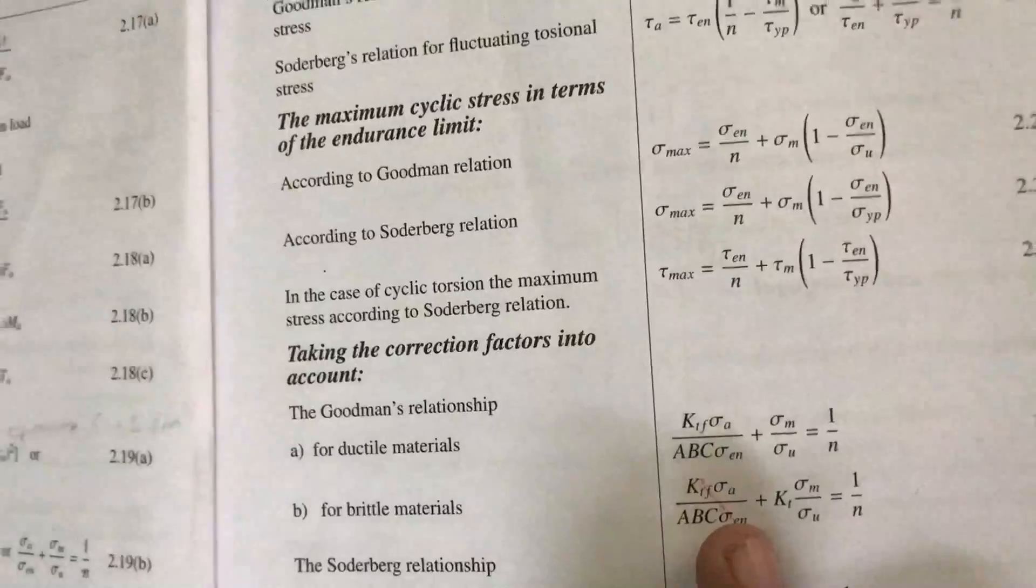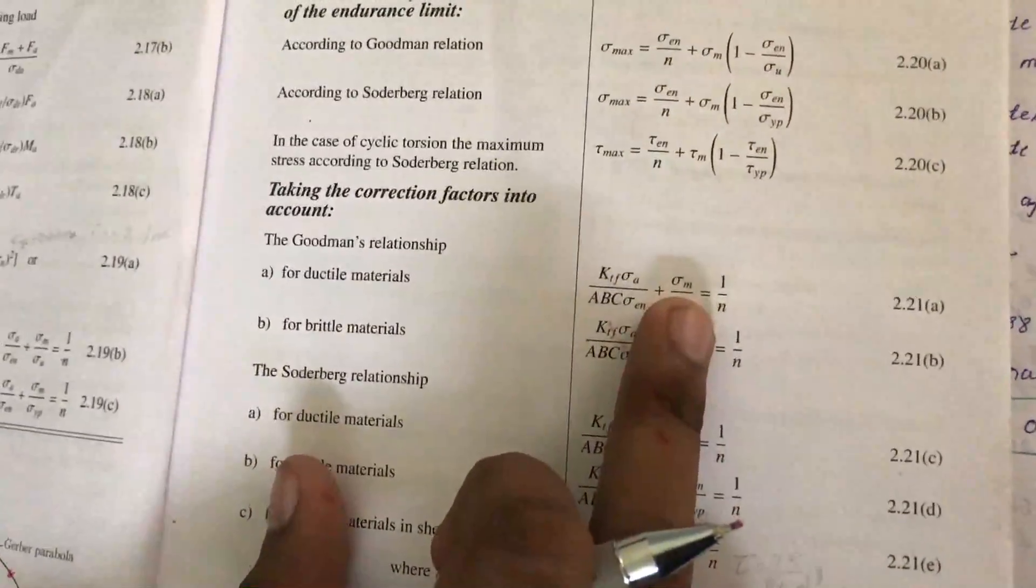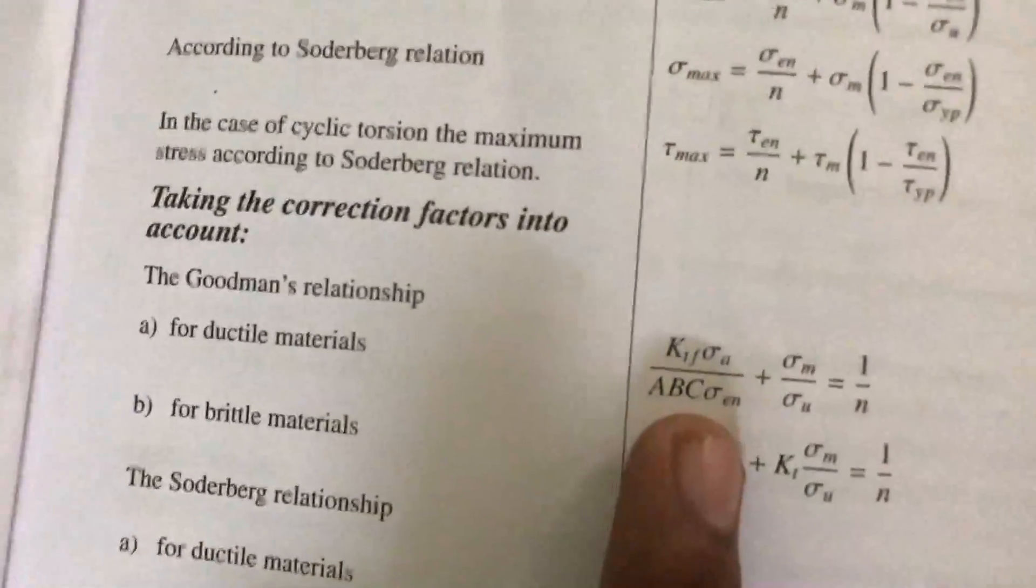The relation is: K_tf × σ_A / (A×B×C×σ_en) + σ_M / σ_u = 1/n. Sigma A and sigma M are found in terms of D, A, B, and C. These factors A, B, C can be assumed.